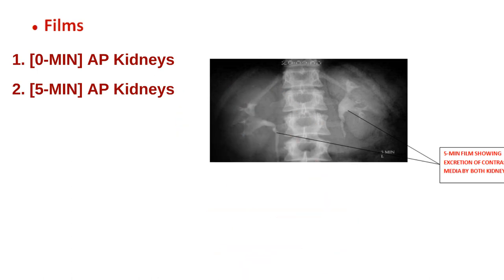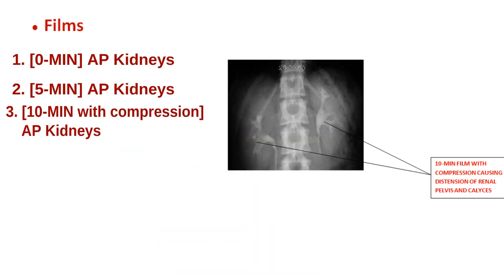The next image is taken 5 minutes after contrast media was injected — also an AP view of the kidneys — and shows contrast media being excreted from both kidneys. In departments that use compression, the compression band is applied after this view. The purpose of compression is to distend the renal pelvis and calyces, making them much more visible, though it is very inconvenient and many radiology departments do not use it today. The next image is taken 10 minutes after contrast media was injected, also an AP of the kidneys, where compression makes the renal pelvis and calyces more visible.